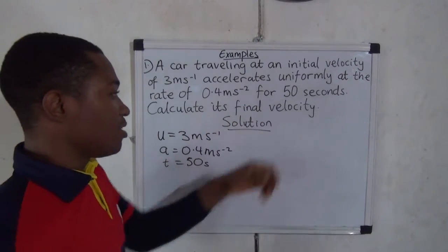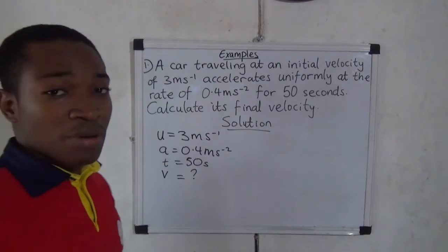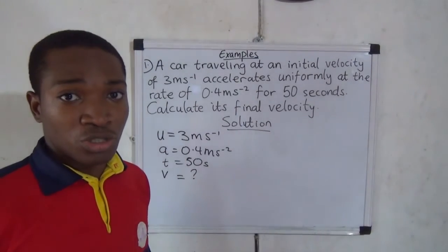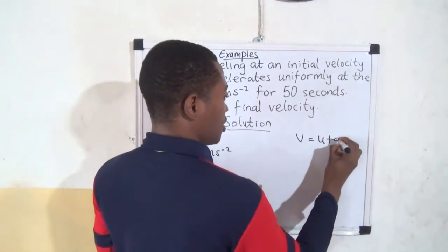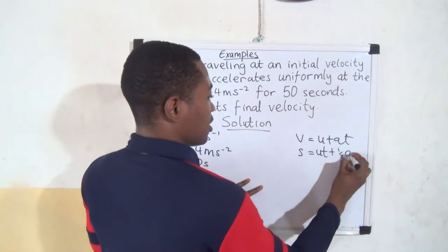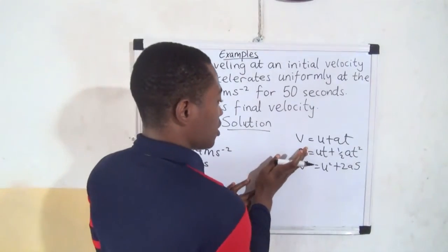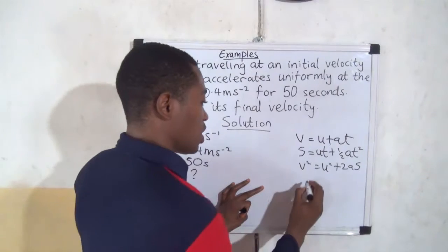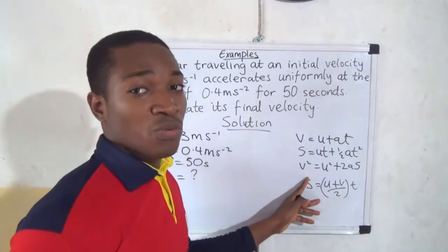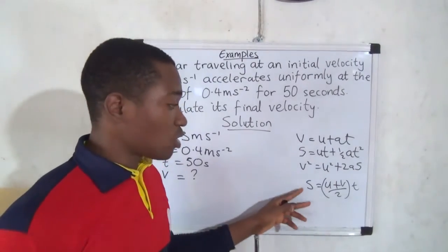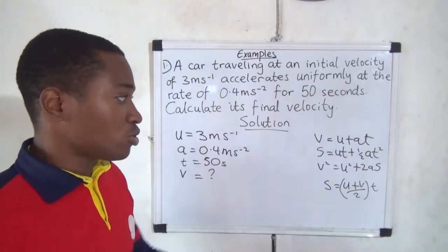We also need to calculate the final velocity V. After listing all the parameters, we decide the appropriate equation of rectilinear motion to use. There are three equations: V = U + AT; S = UT + ½AT²; and V² = U² + 2AS. There is also a fourth sometimes used: S = ((U + V) / 2) × T. From the given parameters, we select the appropriate equation.